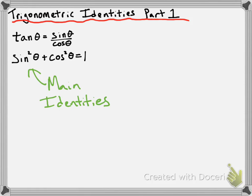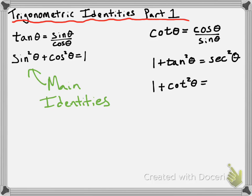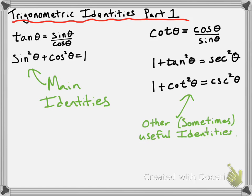You can use these and the reciprocal identities to prove anything we're going to do this year. I did give you about three other trigonometric identities that can be useful sometimes but aren't going to be completely necessary. The first one was cotangent of theta equals cosine of theta divided by sine of theta. Then we have the second and third Pythagorean identities: one plus tangent squared of theta equals secant squared of theta, and one plus cotangent squared of theta equals cosecant squared of theta.